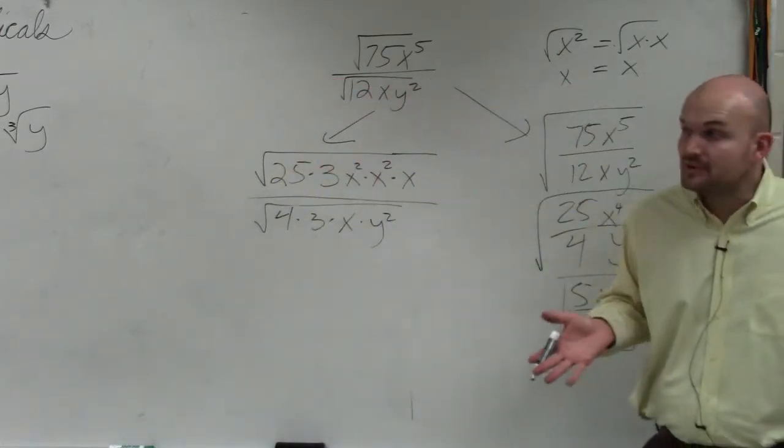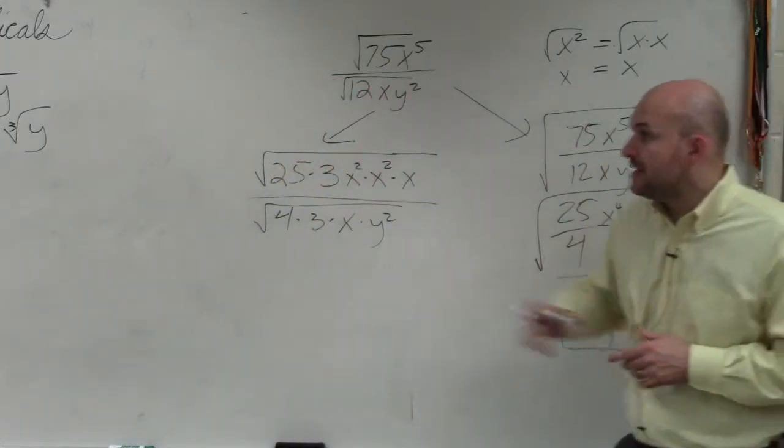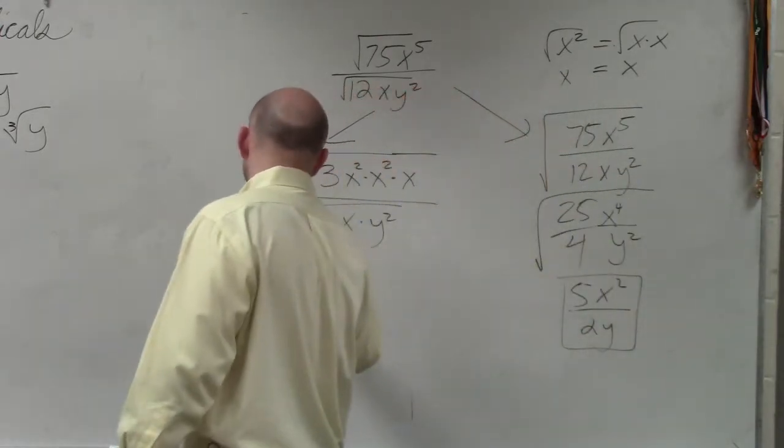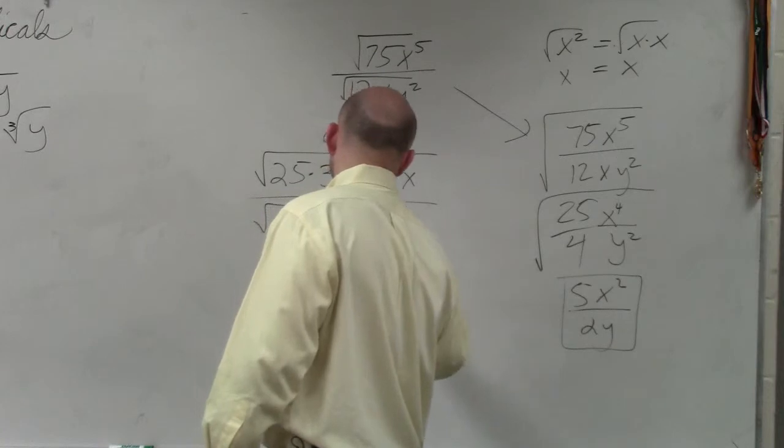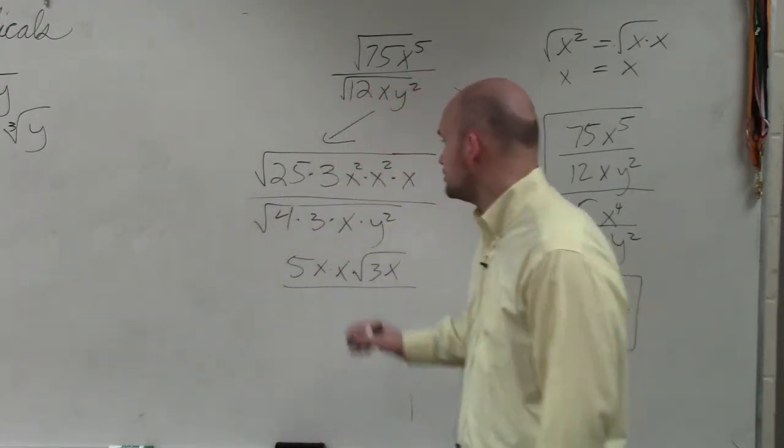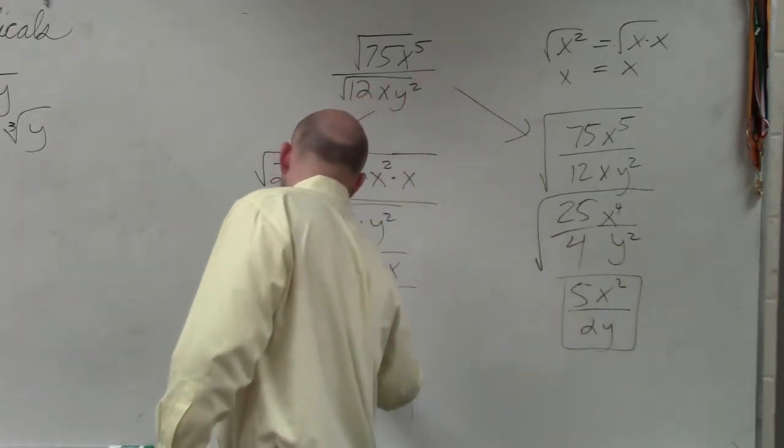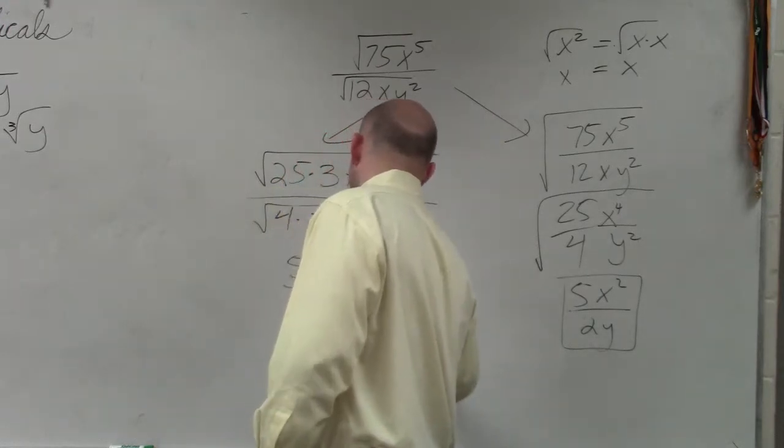If you simplify each one separately, you can go ahead and complete these. Then the square root of 25 is 5x times x times the square root of 3x, all over the square root of 4 is 2. Square root of y squared is y. And you're left with 3x.